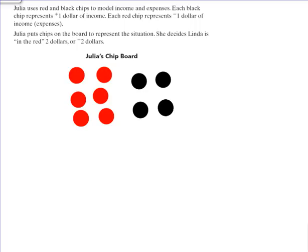In this problem it says Julia uses red and black chips to model her income and expenses. Her black chips represent a positive dollar—I'm just giving an example of how you can do it in your journal as you're following along—and her red chips represent a negative dollar. You can see that the black chips are positive dollars; she has four. And the red chips represent negative dollars; she has six.